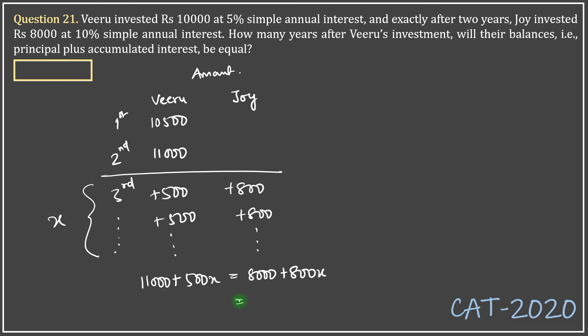But then 10 years was from this point. Let's read the question. What does the question say? How many years after Veeru's investment? So Veeru's investment was right here, which means another two years. So 10 plus 2, 12 years would be the time after which their amounts will become equal after Veeru's investment.